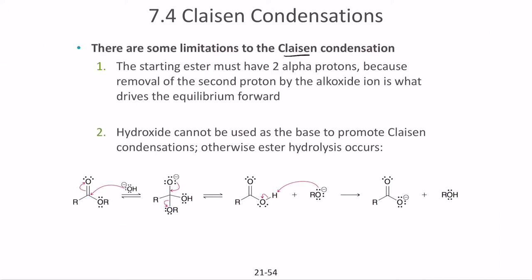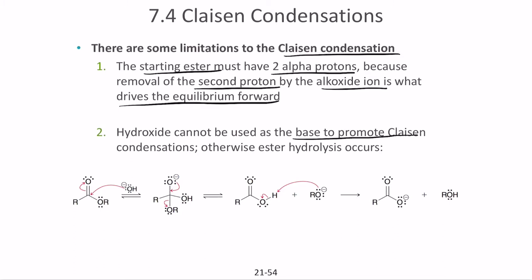There are some limitations to Claisen condensation. The starting ester must have at least two alpha protons, because removal of the second proton by the alkoxide ion is what drives the equilibrium forward. If there are not two protons, the reaction does not proceed. Additionally, hydroxide cannot be used as the base — using OH will instead promote ester hydrolysis.